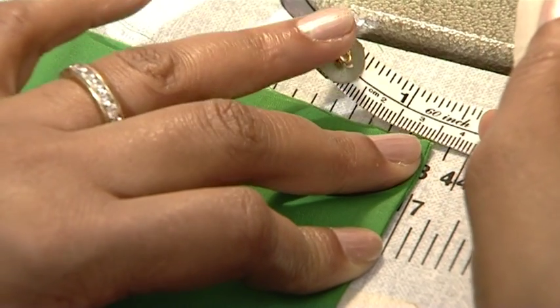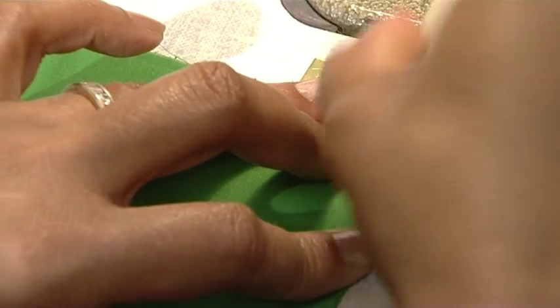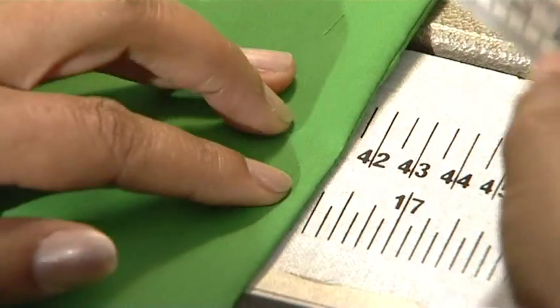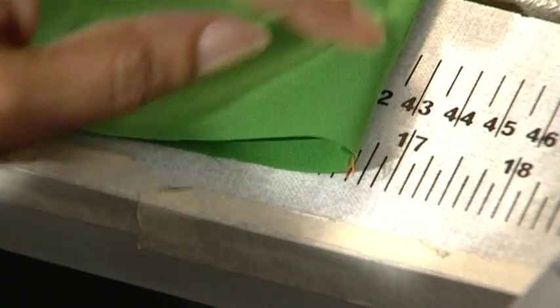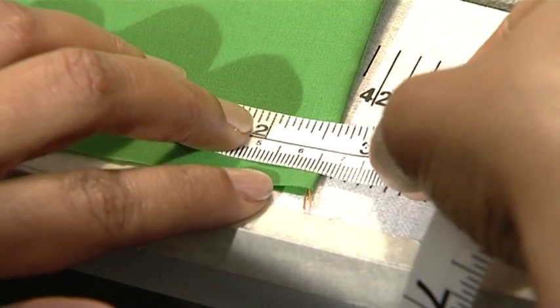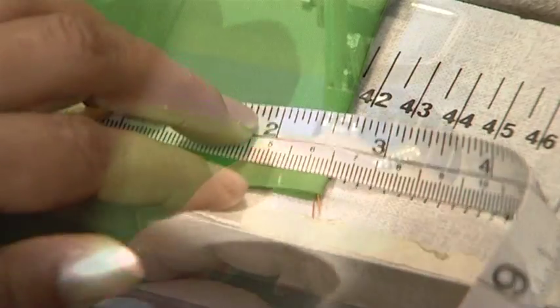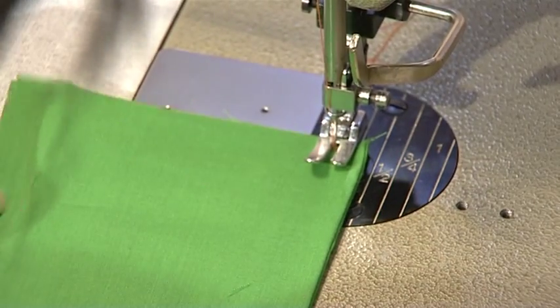The total seam allowance now used is 1.5 centimeters. Ensure that the seam is folded exactly on the prior seam that you've made.